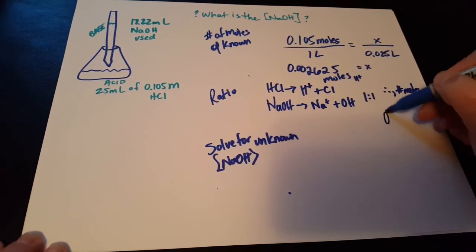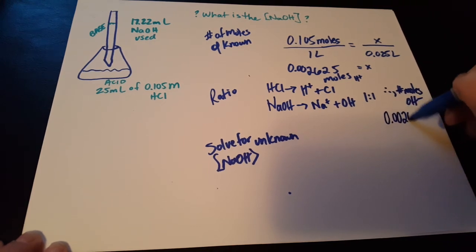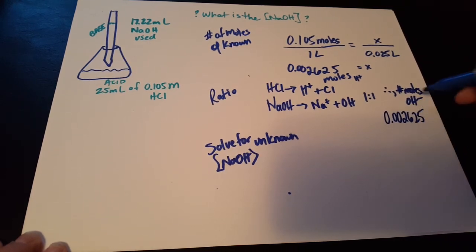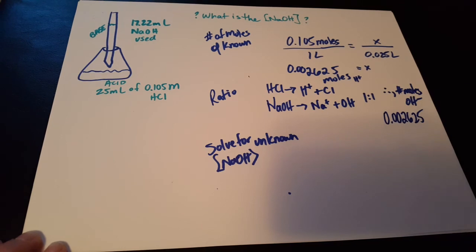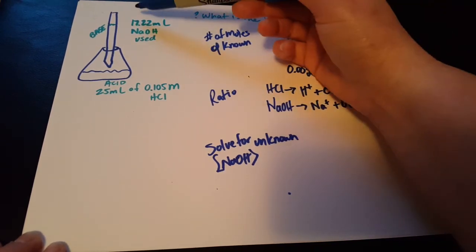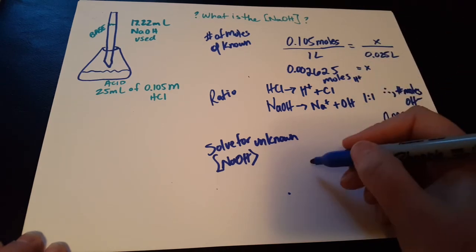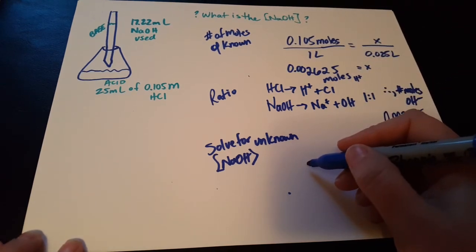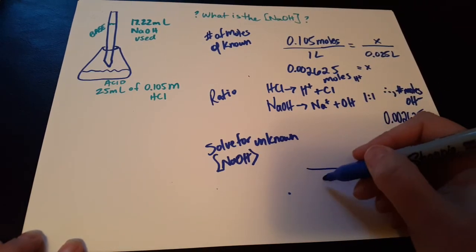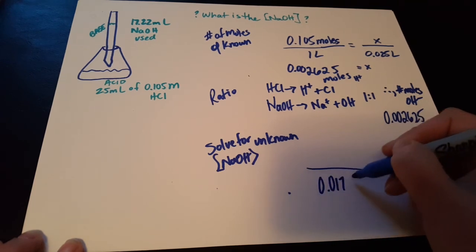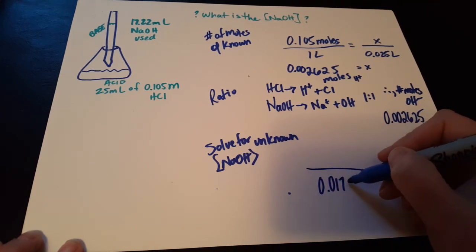Now we're going to solve for the unknown. We know that we've delivered 17.22 milliliters. And in that 17.22 milliliters, we must have delivered exactly this number of moles of OH- to be equal and to get us to our equivalence point.